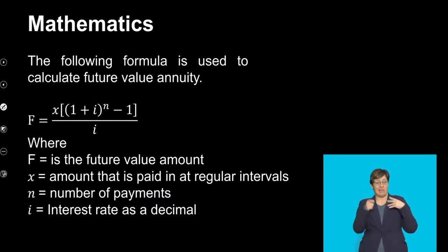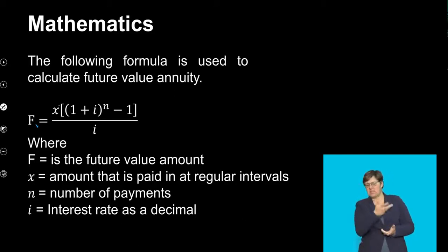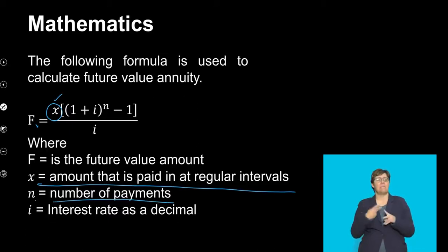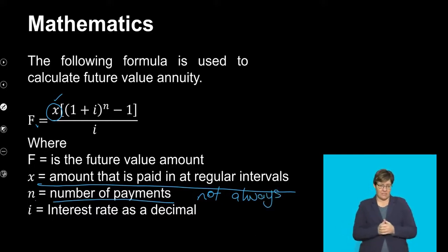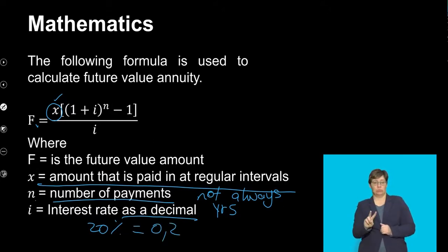Now the following formula is used to calculate the future value annuity. Remember it's F - some people prefer using FV; it's entirely up to you, as long as the F is there. Then it's X, which is our monthly payment or the amount we pay on regular intervals. N will be the number of payments - not always in years, because it can be months, quarters, or half yearly. And then the last thing will be the interest rate as a decimal - so if given 20%, that's 0.2, then divided by the compounding period.